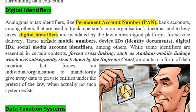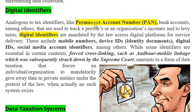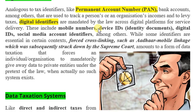What are digital identifiers? When you collect a tax, there is some identification number personal to the individual — for example, the Personal Account Number in banking systems, used as an identifier for revenue. This tracks a person's income details wherever they go and wherever transactions happen. Similarly, we have digital identifiers — these are mandated by law across digital platforms for service delivery and include mobile numbers, device IDs, digital IDs, and social media account identifiers.